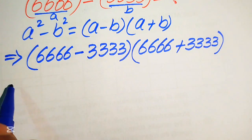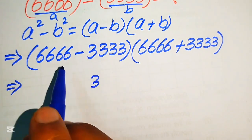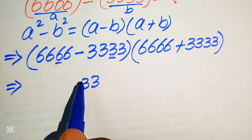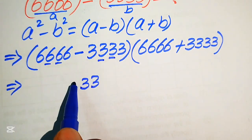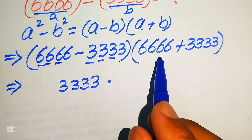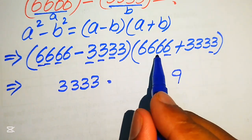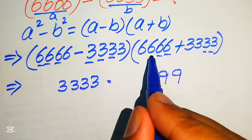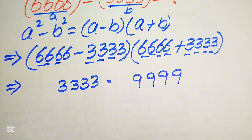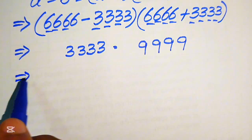So we get 6666 minus 3333 times 6666 plus 3333. When we subtract: 6 minus 3 is 3, 6 minus 3 is 3, 6 minus 3 is 3, giving 3333. When we add: 6 plus 3 is 9, 6 plus 3 is 9, 6 plus 3 is 9, 6 plus 3 is 9, giving 9999.